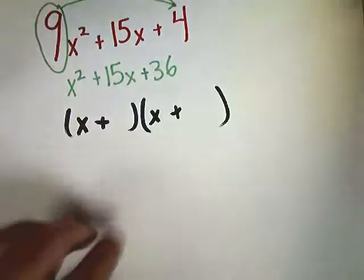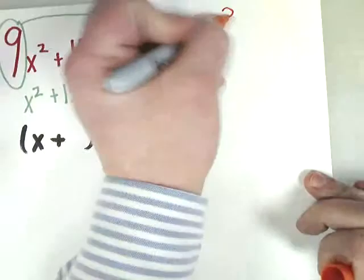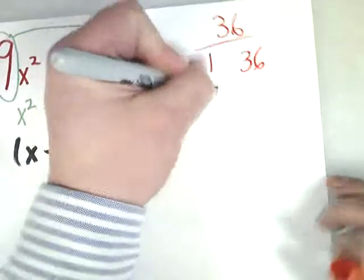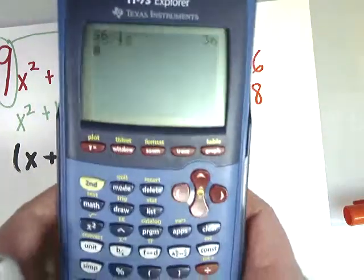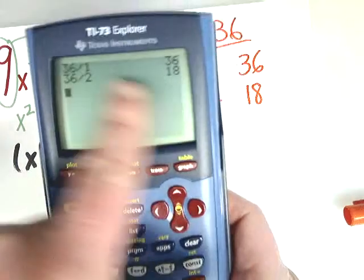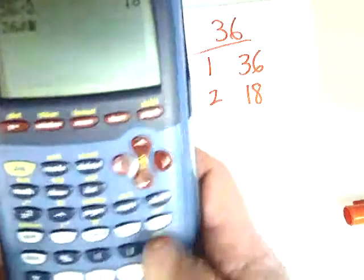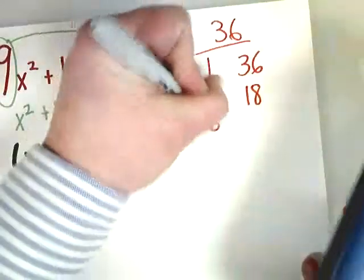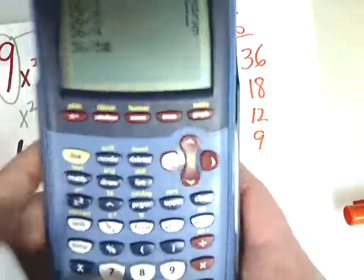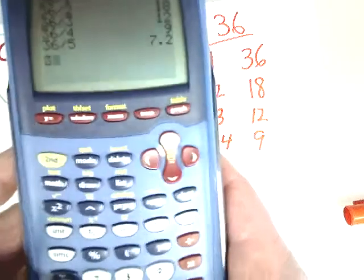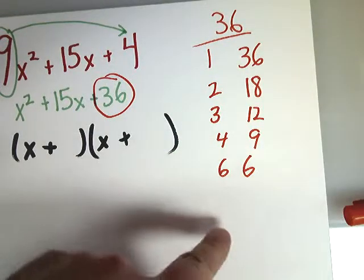The next step is to do a factor tree. Factor trees are pretty simple. I'm just going to do a factor list for 36. Here's my factor tree for 36. I've got 1 and 36, 2 and 18. By the way, if you're really bad at this, if you have a calculator, just do divide by 1. It always works. Then do 36 divided by 2. So the answer is 2, and you get 2, and you get an integer answer, no decimal. You get 18, so write down 2 and 18. You'll do 3, you'll get 12. You'll do 4 and get 9. You'll do 5 and get some weird decimals, so that's not a factor. But 6 is. You get 6 and 6.